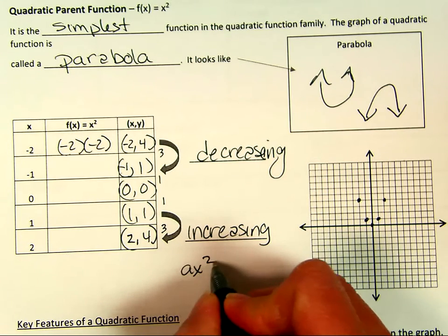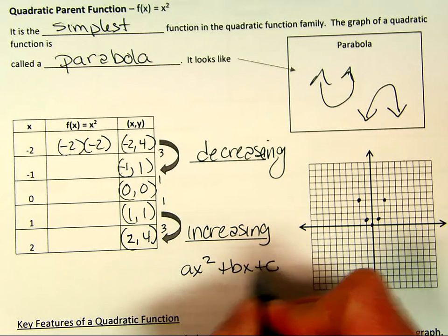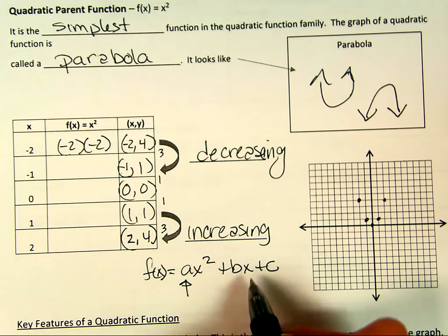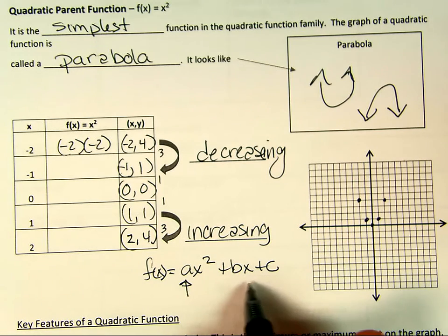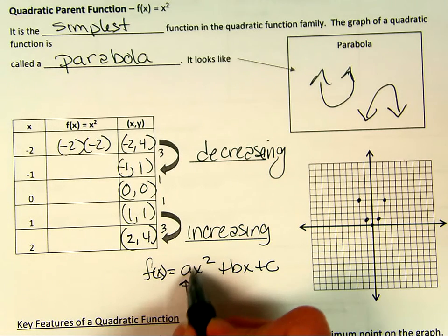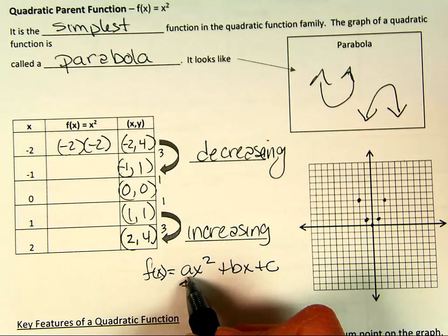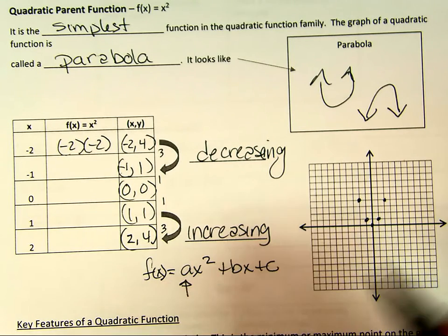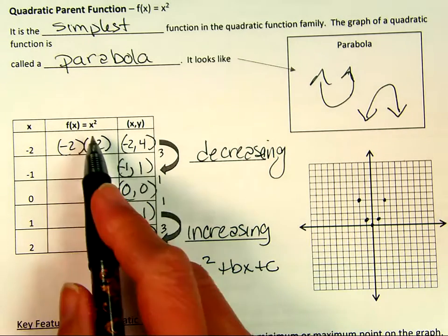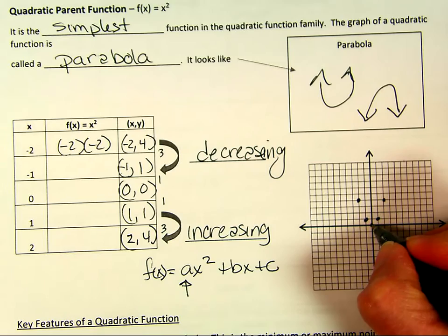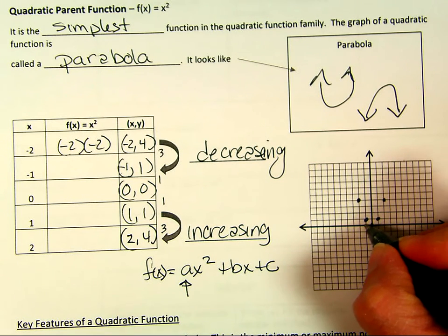When a is 1 — because that's our parent function — our standard form is ax squared plus bx plus c. I'm only talking about a today; we'll cover b and c later. A controls whether it shifts up and down, opens up or down, and whether it's vertically compressed or stretched. With a equal to 1, notice the pattern at the vertex: I went over 1 and up 1, over 1 and up 1.